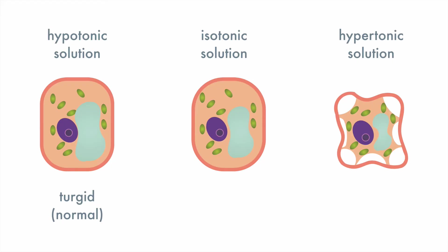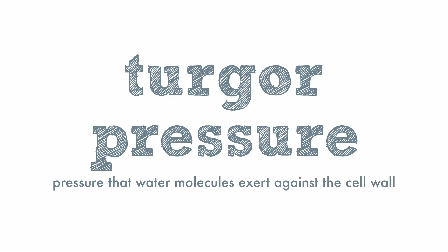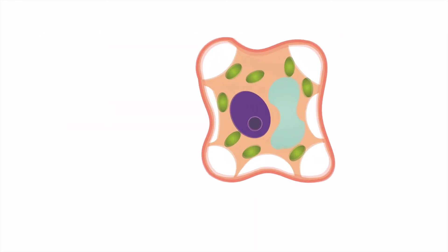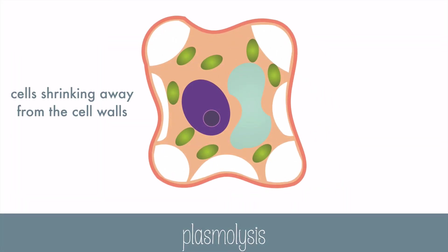Cells in an isotonic solution are actually flaccid and bendable, which is not good for the plant. If they're in a hypertonic solution, they will completely wilt because all of the water rushes out of the vacuole and it loses turgor pressure. Turgor pressure is the pressure that water molecules exert against the cell wall. Under hypertonic conditions, the cell membrane peels away from the cell wall. The cells shrinking away from the cell wall is called plasmolysis.